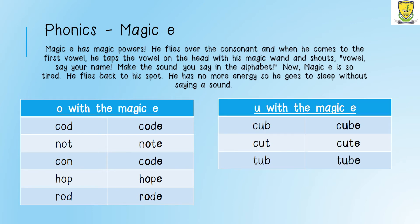The next phonics we are going to do is U with the magic E. My first word is 'cub': K-U-B, cub. But if I add a magic E at the end of it, my U is now going to say its name. So my word is now K-U-B-E, cube. K-U-B-E, cube.